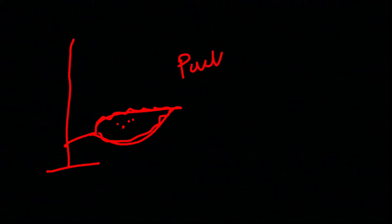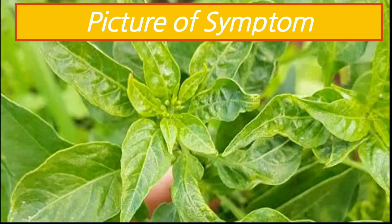If the fruits are formed, they remain small, deformed, and poor in quality. This plant shows virus infection — this is a leaf with virus infection, showing the characteristic symptoms of chili leaf curl virus.